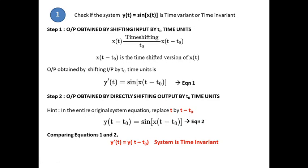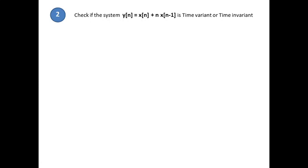The meaning is: whether you directly shift the input and produce an output, or you produce an output and then shift it, both results are the same — that is why the system is time invariant. Next problem: check if y(n) = x(n) + n·x(n − 1) is time variant or time invariant. This is a discrete time system.